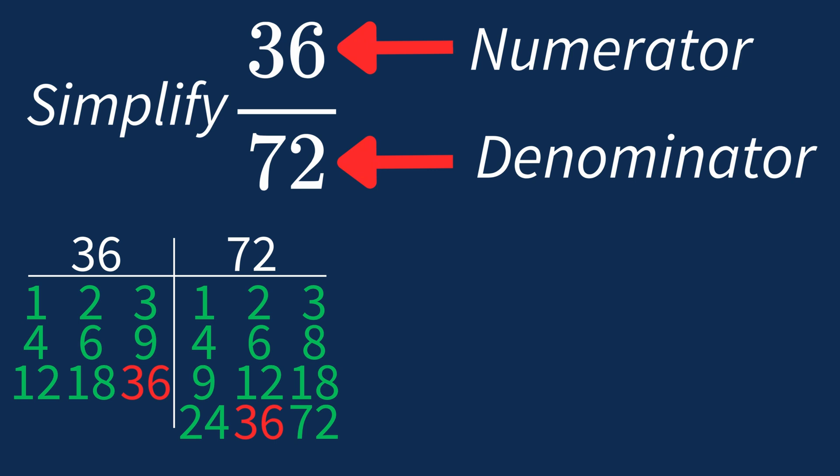Dividing the numerator 36 by 36 gives us 1. Dividing the denominator 72 by 36 gives us 2. So after dividing, the simplified fraction is 1 over 2.